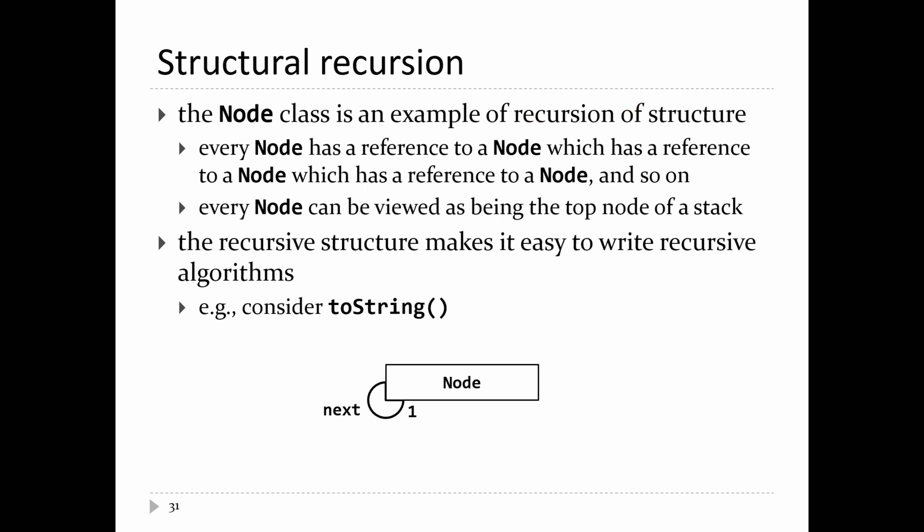The node class is an example of what's called recursion of structure, or structural recursion. Every node has a reference to a node, but there's a problem: that node also has a reference to another node, which has a reference to another node, and so on. Just like in programmatic recursion, you need some base case somewhere to stop the recursion. For our node class, eventually you come to a node whose reference is null — that's what you do for a linear structure.